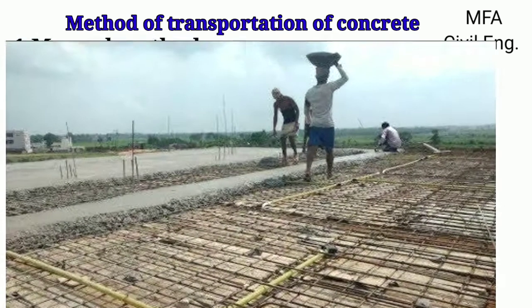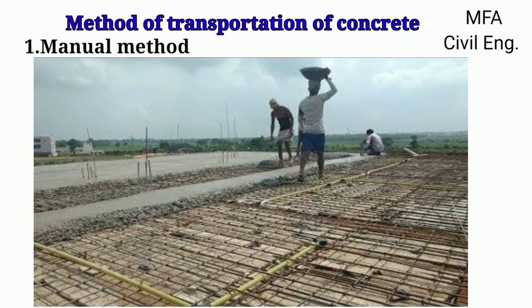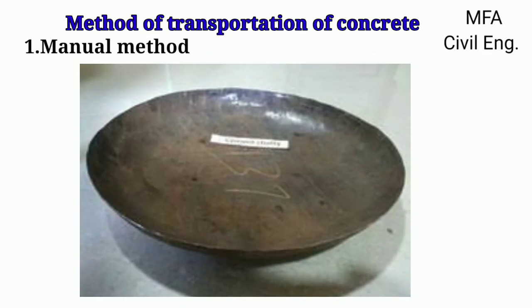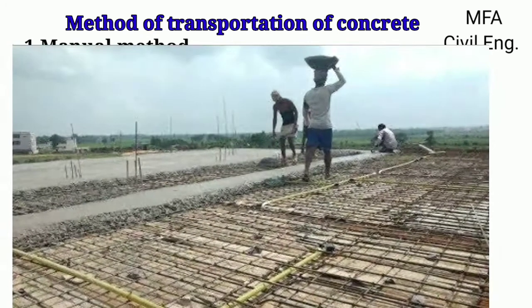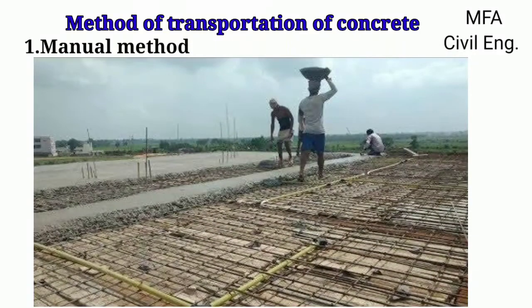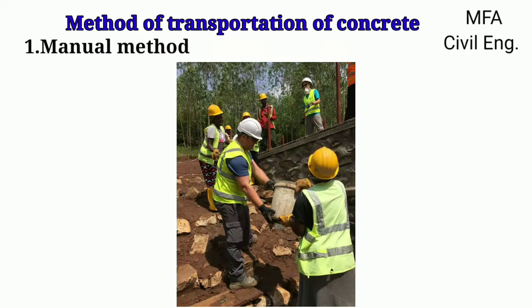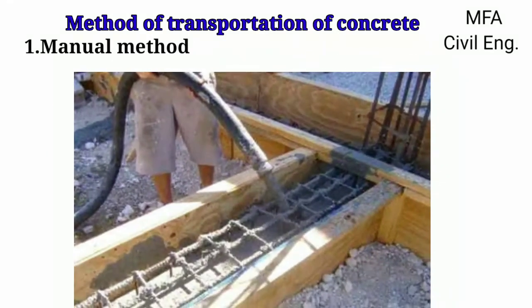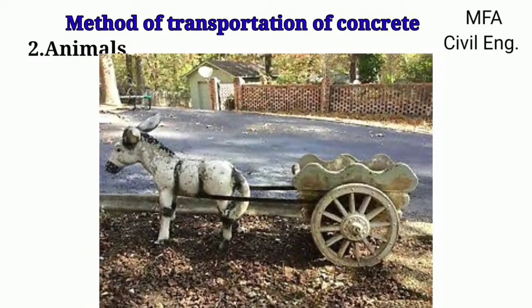In the manual method, concrete for small work is transported by labour in a steel pan or gamelas carried on the head. Many times a human chain is used and the labour just pass the gamela from the mixing place of the concrete to the formwork where it is to be placed.